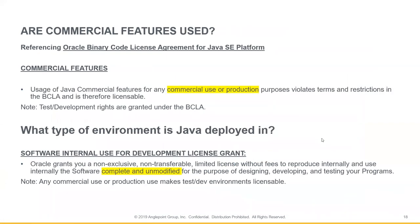Next, we're going to jump into the commercial features. We're going to reference the Binary Code License Agreement — we suggest you take a look at the BCLA yourself for commercial features, specifically Section A: commercial features. If commercial features means everything above the base JDK and JRE environments, follow up with an email and we can send over the information in a PDF with all the different features and some links in the BCLA highlighting the commercial Java components.